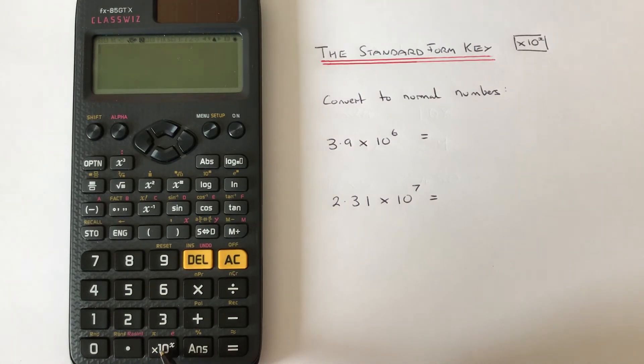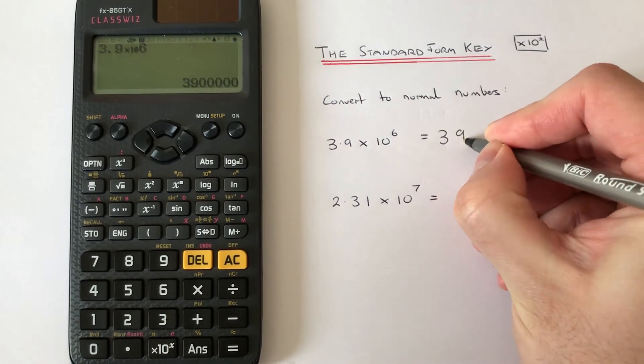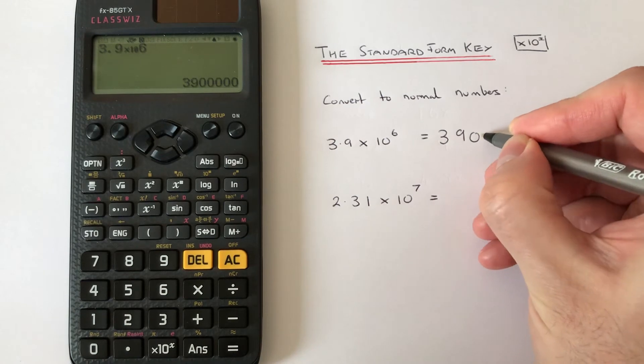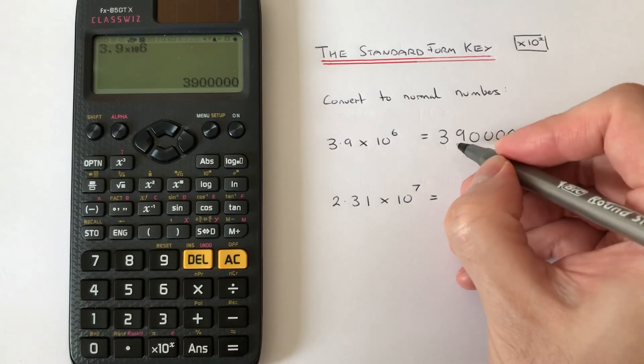Let's have a look at the first example. We've got 3.9 times 10 to the power of 6. So we have 3.9, then press the times 10 key, and then we just press 6, press the equals key, and we get 3900000.